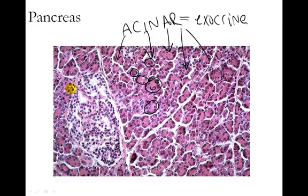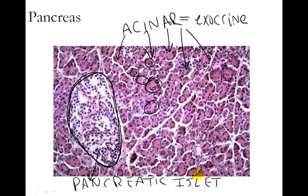You're also going to notice that there is an area of this slide where the cells look different. This particular area, which is a compartmentalized bundle of different cells in the pancreas, is called a pancreatic islet. It's also known as an islet of Langerhans — Langerhans being the person it was named after. This pancreatic islet contains four different types of cells: alpha cells, beta cells, delta cells, and F cells.